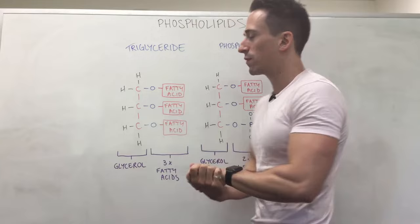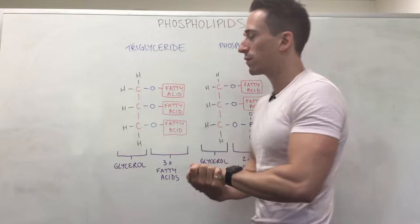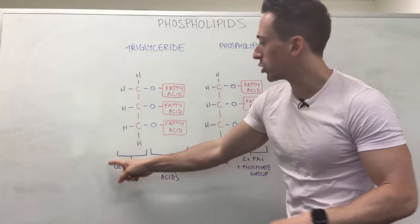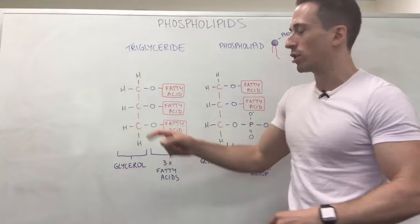Now when we look at a phospholipid, let's compare it to a triglyceride. Remember, I spoke in the previous video that a triglyceride is the way that our body stores fats and it's made up of a glycerol backbone. That's the glycerol here, three carbons. You can see the hydrogens and three oxygens.